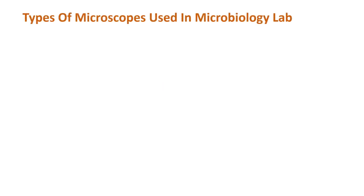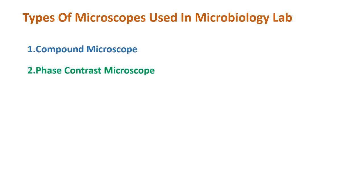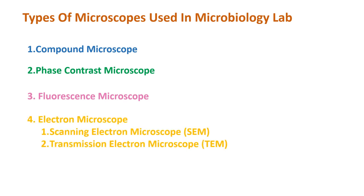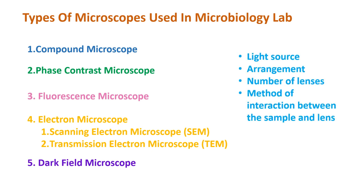There are various types of microscopes used in the microbiology lab: compound microscope, phase contrast microscope, fluorescence microscope, electron microscope, and dark field microscope. There are two types of electron microscope: scanning electron microscope and transmission electron microscope. All the microscopes used in the microbiology lab are classified based on the source of light, arrangement and number of lenses, or method of interaction between the sample and lens.